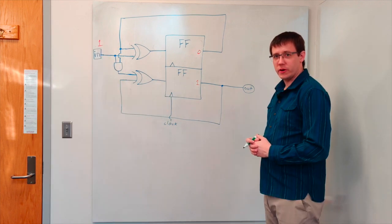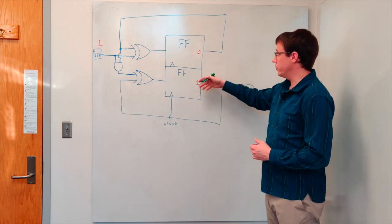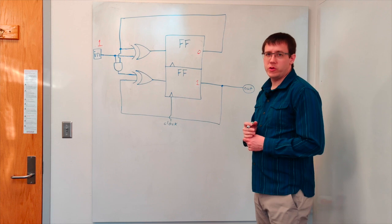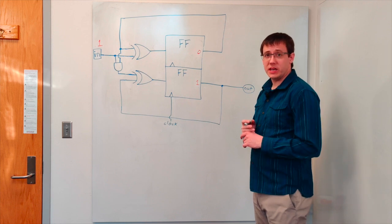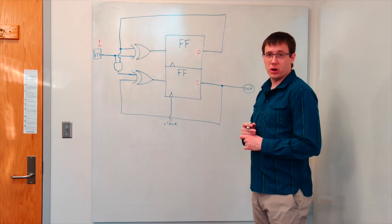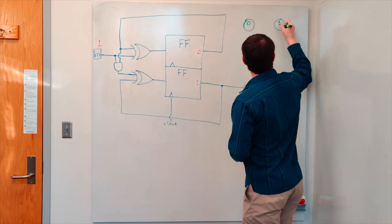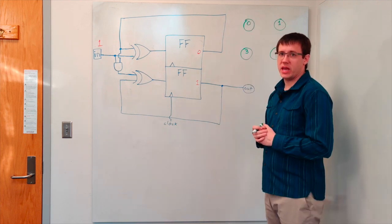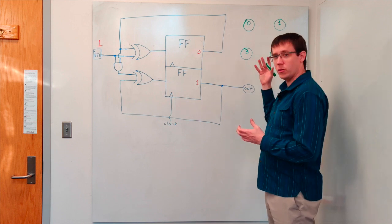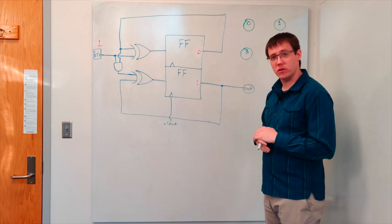For circuits like this that store some internal state, we will use the abstraction of a finite state machine. The memory in this circuit can be in four different states: 00, 01, 10, or 11. So to draw a finite state machine for this circuit, we'll need to draw four nodes, one for each state. Then we can represent the behavior of this circuit by diagramming which state the circuit will transition to when it sees different inputs.